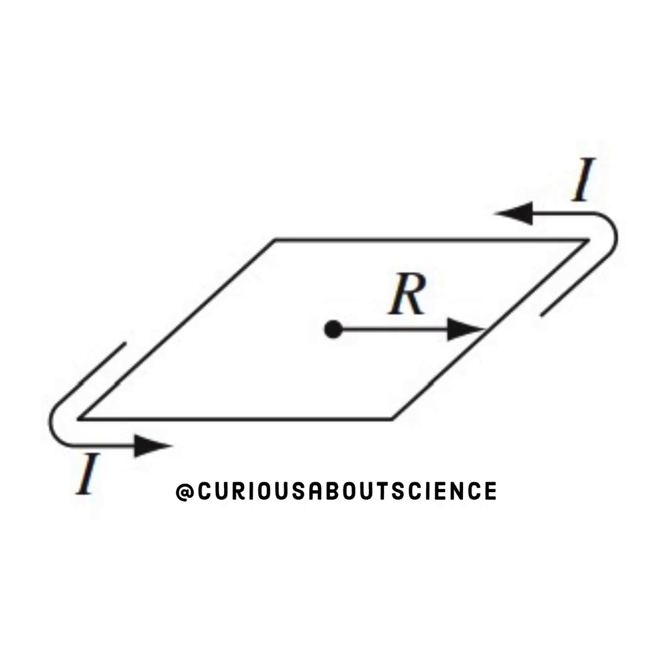Quick look at the diagram, we have our square, and R is indeed from the center to the side, and we have the steady current I going around the loop.